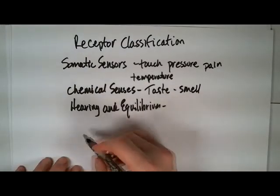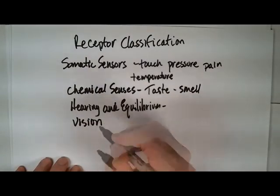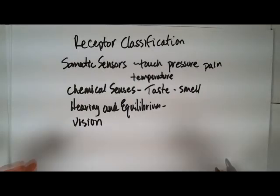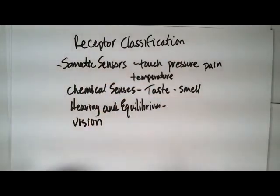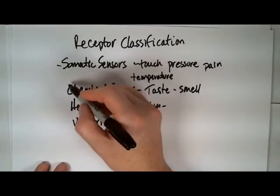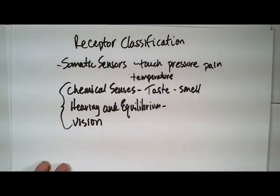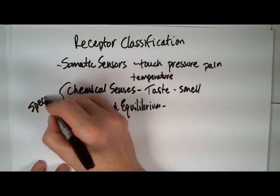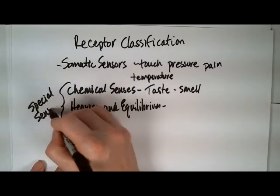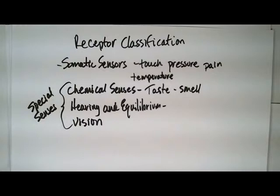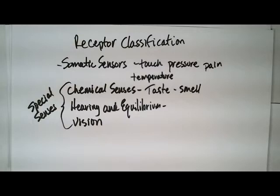And then we also have vision. You can take those sensors — somatic, which is touch, pressure, pain, temperature — and then we can take all of these chemical and special senses and call them special senses. So taste, smell, hearing, and vision — these are your basic five senses. Well, it's four out of the five, because touch is a somatic sensor.